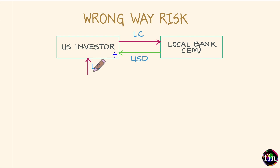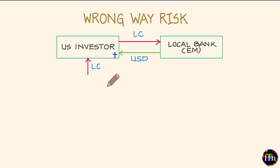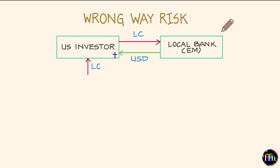Now if this country were to undergo a period of distress, the local bank with which our US investor has transacted — because this bank is domiciled in the same country — will not be left unharmed. The economy of this country will be affected and so will the local bank. The credit health of this local bank therefore goes down, and the probability of default of this local bank goes up.